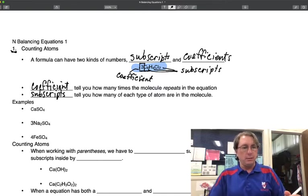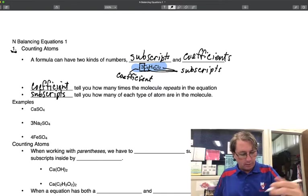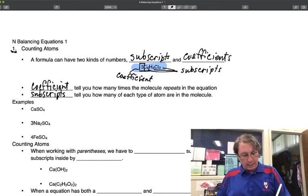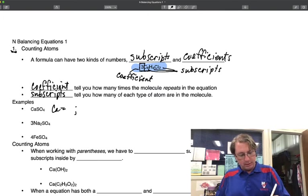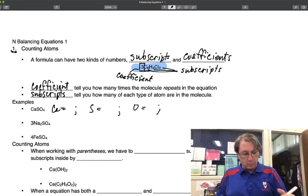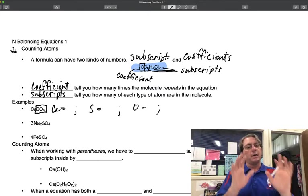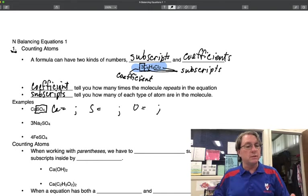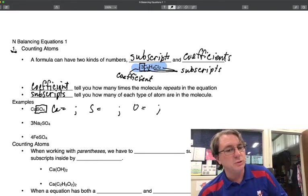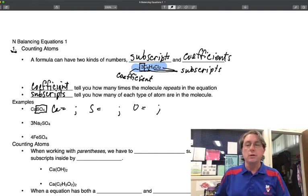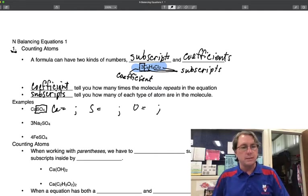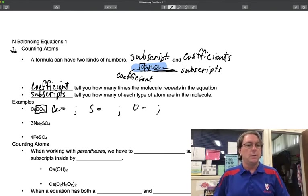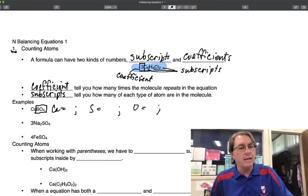Here are some examples. The way we do this on the worksheet looks like this: I have calcium equals semicolon, sulfur equals semicolon, and oxygen equals semicolon. I want to point out that you're used to treating SO4 as a unit, but now we have to count its elements individually, which is a little different from what we did before. Anything with a capital letter is an element.